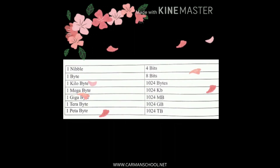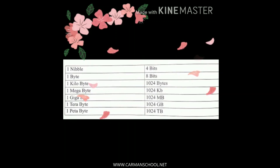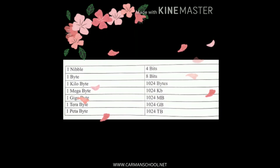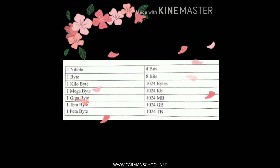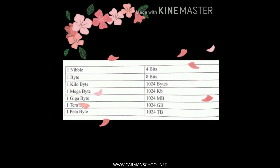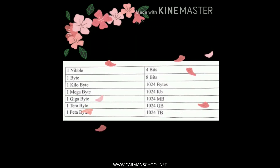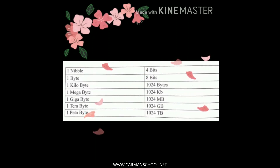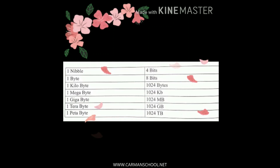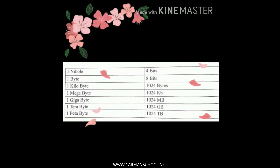1 terabyte is equal to 1024 GB. Before terabyte comes GB, and before GB comes KB. Next is your 1 petabyte. Bigger than your terabyte is your 1 petabyte, which is equal to 1024 TB. So the order is: first bit, then nibble, then byte, then KB which is kilobyte, then MB which is megabyte, then GB which is gigabyte, then terabyte (TB), and 1 petabyte (PB). Petabyte is the biggest unit and the smallest is your bit.